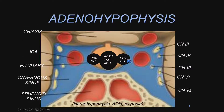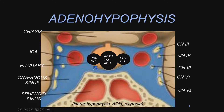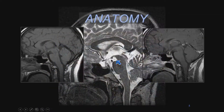Prolactin and growth hormone are typically produced laterally in the gland. These are the most common adenohypophyseal tumors — by far, prolactin is the most common. Adenomas are typically paramedian in location. They tend to be more centrally located if they involve the less common hormone-producing tumors: ACTH, TSH, and ADH — the antidiuretic hormone being in the posterior pituitary gland.